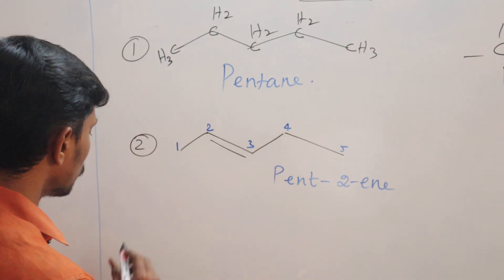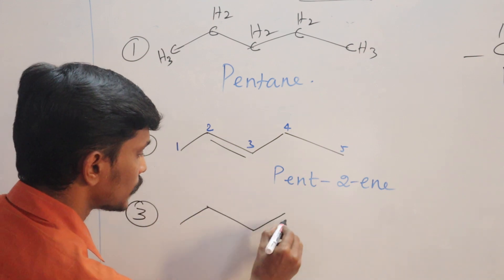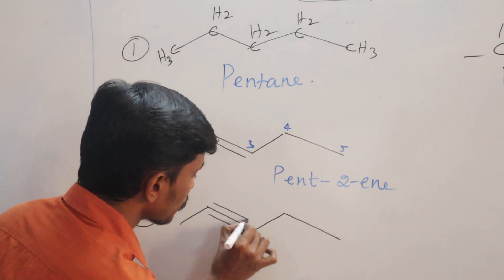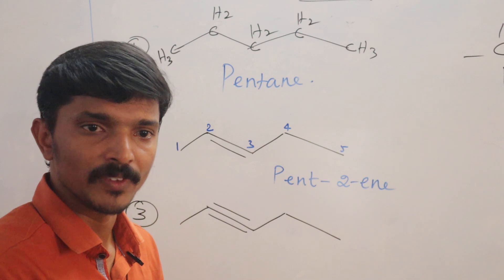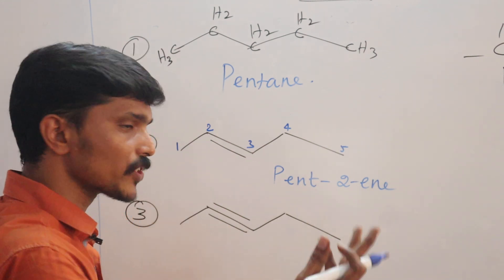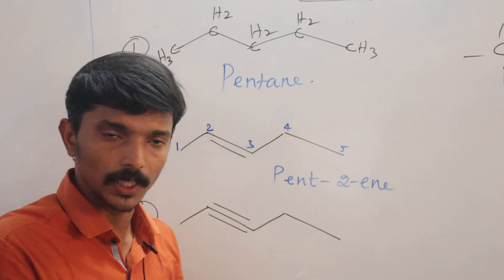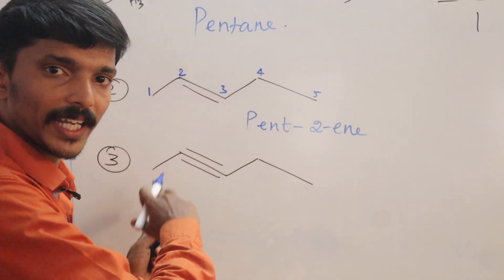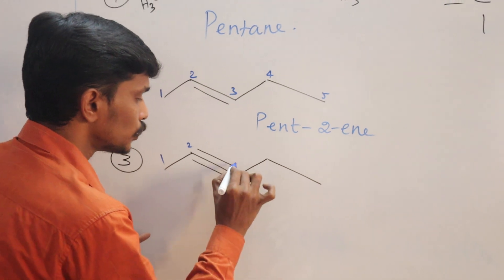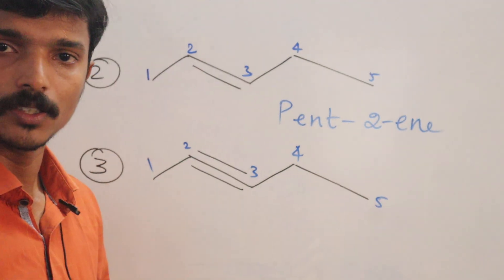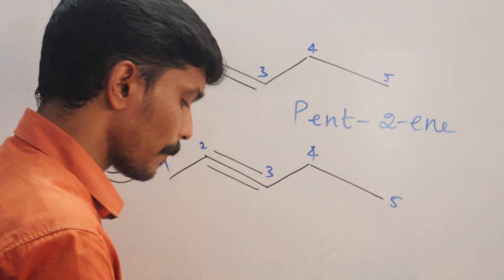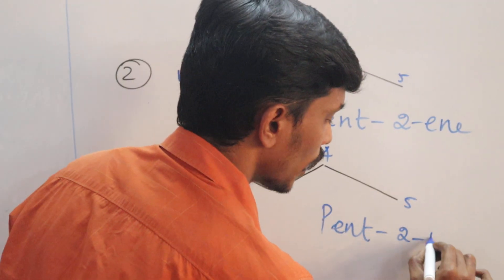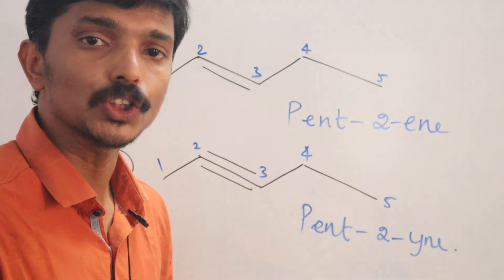One more example with the same 5 carbons, but this compound contains a triple bond. Triple bond is also a functional group, so we give it the lowest number. Numbering left to right: 1, 2, 3, 4, 5 — the triple bond is at the second position. So it is called Pent-2-yne.